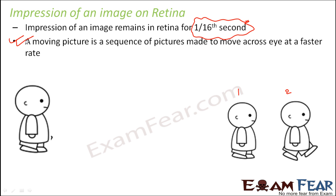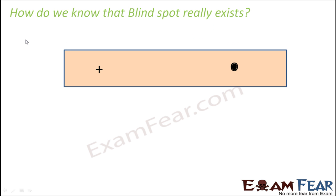To demonstrate the blind spot, take a strip of paper and mark a plus sign on one side and a dot on the other side. This experiment will help you feel the existence of the blind spot — the point on the retina where no image is formed.